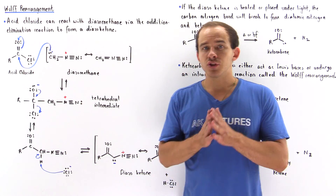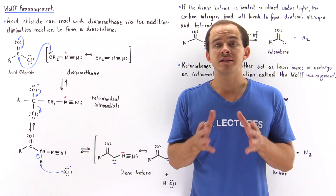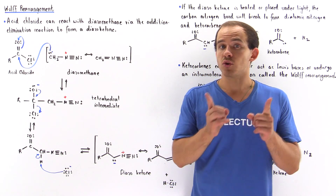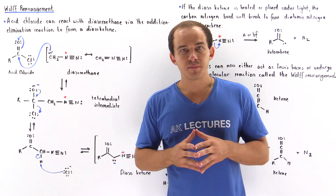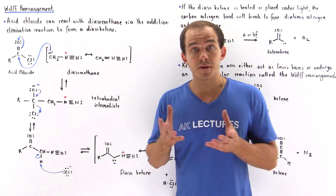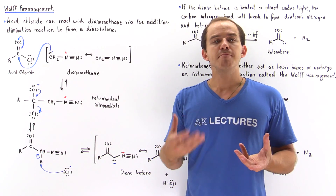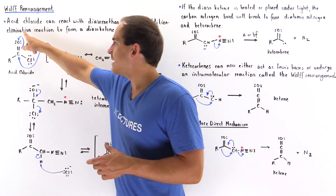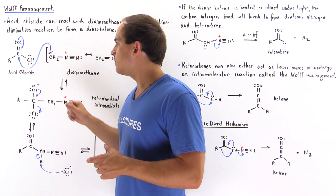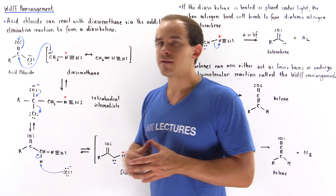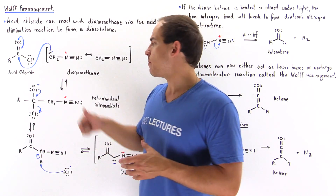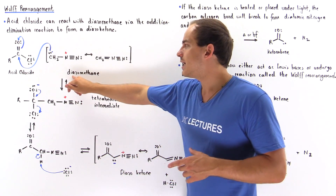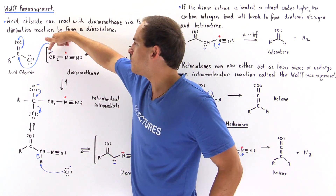Before we discuss the reaction mechanisms, let's discuss how to form the molecule known as the diazoketone, which will act as the reactant in the Wolff Rearrangement. To form this molecule, we have to mix an acid chloride with a molecule called diazomethane. This is our acid chloride, which contains the carbonyl group, the R hydrocarbon group, as well as a chloride atom that will serve as a good leaving group in the second step of this reaction.